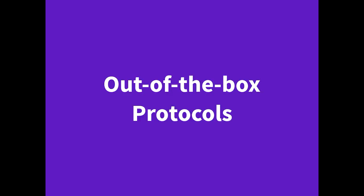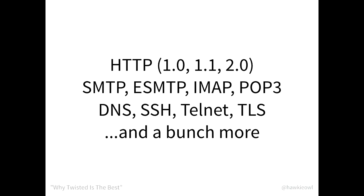What do we get out of the box? Twisted isn't just these little levels; we've also got some higher-level things. We support HTTP 1.0, 1.1, and 2.0 as a server, and 1.0 and 1.1 as a client. We support SMTP, ESMTP, IMAP, POP3, so you can do all sorts of maily things. You can also do DNS and SSH and Telnet and TLS. There's a whole bunch of different protocols that you can just use within Twisted.